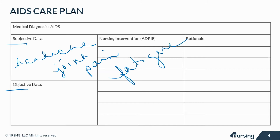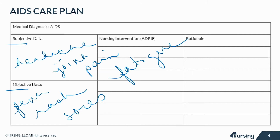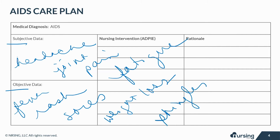Objective or measurable data might include fever, rash, painful mouth sores, swollen lymph glands — which are mainly on the neck — diarrhea, weight loss, thrush, which is oral yeast infection, and maybe shingles or herpes zoster.